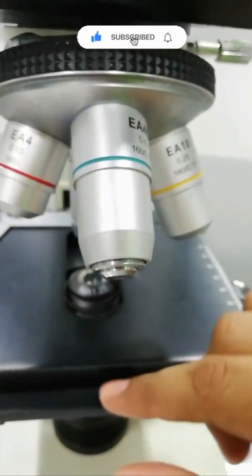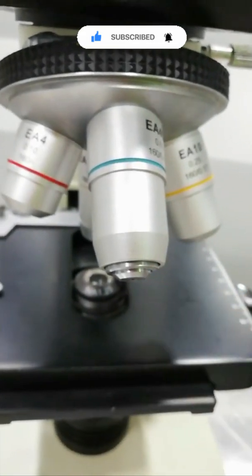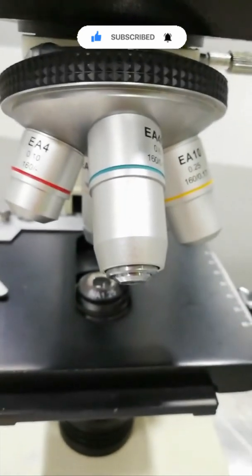On this stage there is a clamp holding the slide. In the center of the stage there is a hole, and underneath this hole is the condenser. So if we look underneath the stage, you see the condenser is up here.